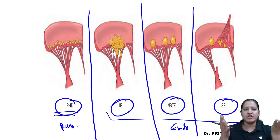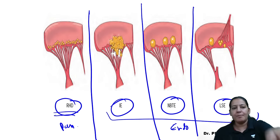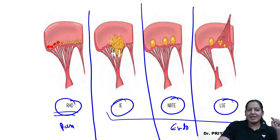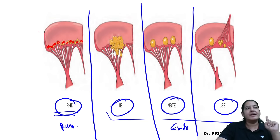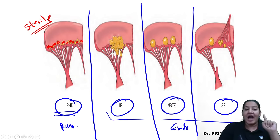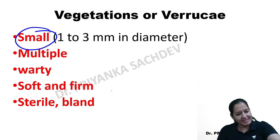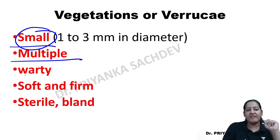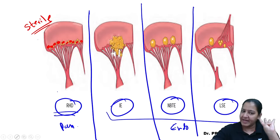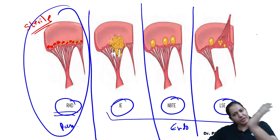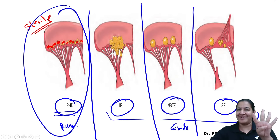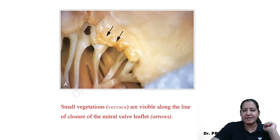The vegetations in rheumatic heart disease are small, multiple, warty, soft to firm, sterile, and bland — they do not contain bacteria because no bacteria are present in the heart; the cause is the antigen-antibody reaction. You can see in the diagrams from Robbins these vegetations on the valve walls, along with the chordae tendineae of the heart.